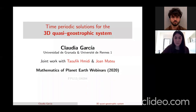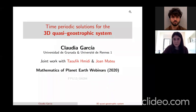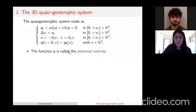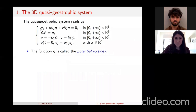From the Universidad Autónoma de Barcelona. I'm going to introduce briefly the equation and later we will enter into the problem. The unknown of the system is q, called the potential vorticity, and q depends on time and also depends on space in R³. The first equation is a pure transport equation for q.